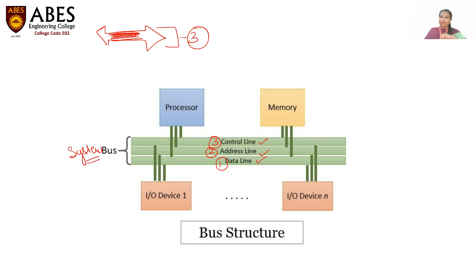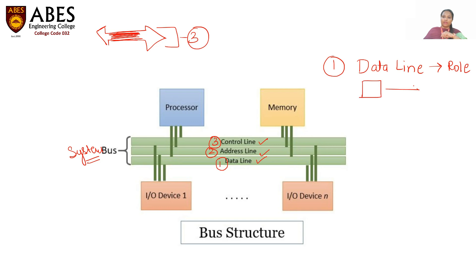The first thing we have to understand is the data line. What is the role of this line? The data lines are used to transfer the data from one device to another device. And that is the reason they are bidirectional — they move in both directions.